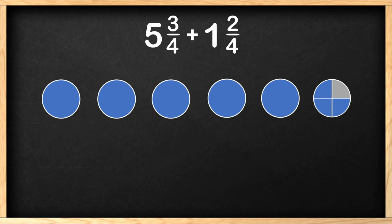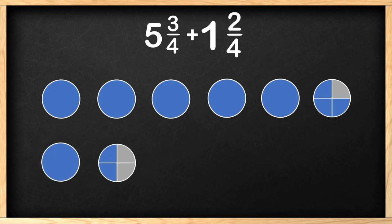Now we can model the other mixed number. 1 and 2 fourths is 1 whole circle and another with 2 of 4 equal pieces shaded. How many whole circles do we have all together? That's right, 6. 5 plus 1 is 6.